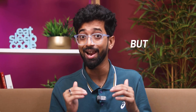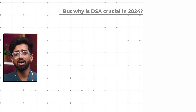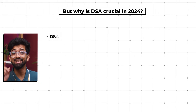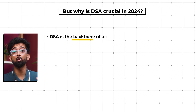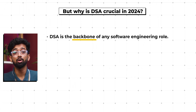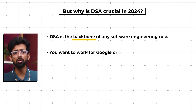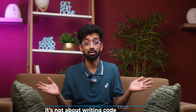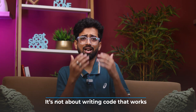But why is DSA crucial in 2024? DSA is the backbone of any software engineering role. Whether you want to work for Google or a hot startup, DSA is a must. The answer is because it solves complex problems efficiently — it is not about writing code that works, it's about writing code that will scale.